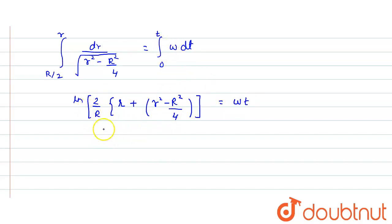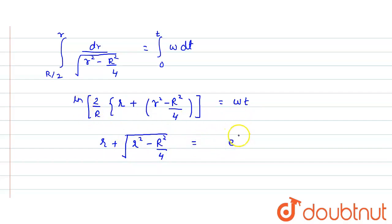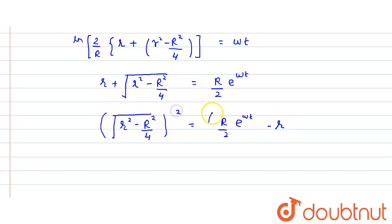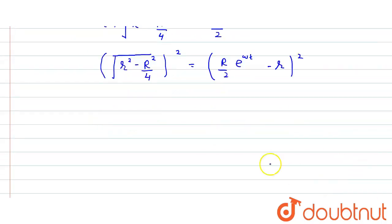Since ω is constant, the right-hand side is ωt. We can now exponentiate both sides: r + √(r² − R²/4) equals (R/2)e^(ωt). Rearranging, √(r² − R²/4) equals (R/2)e^(ωt) − r. Squaring both sides, the r² terms cancel and we can solve for r.